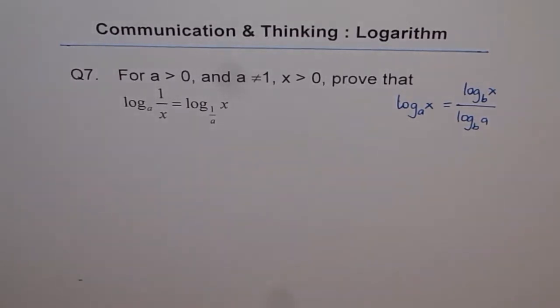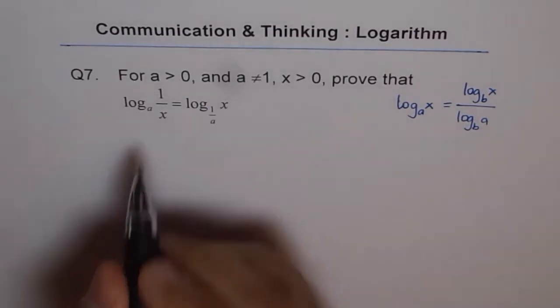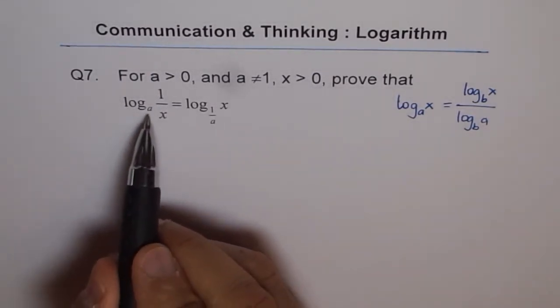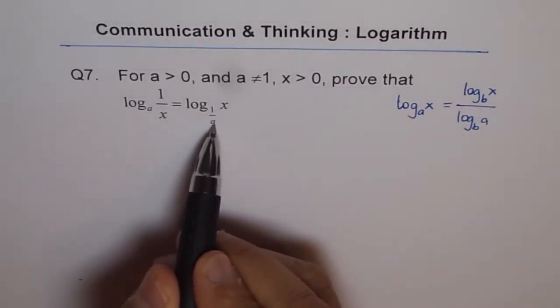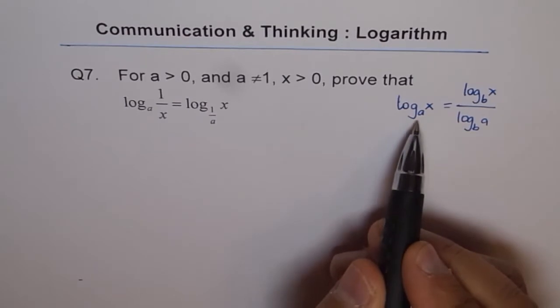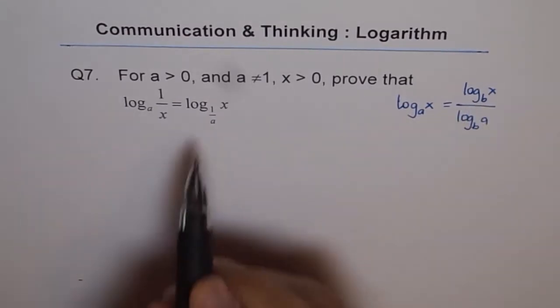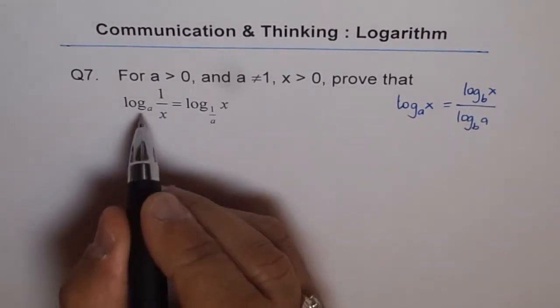It is kind of an identity. Now as you can see, we want to go from base a to 1 over a. So let's change the base from a to 1 over a.